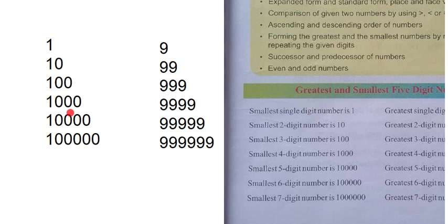In 5 digits, 10,000 is the minimum number and 99,999 is the maximum. And for 6 digits, 1,00,000 is the minimum and 9,99,999 is the maximum. This is the minimum number and this is the maximum number.